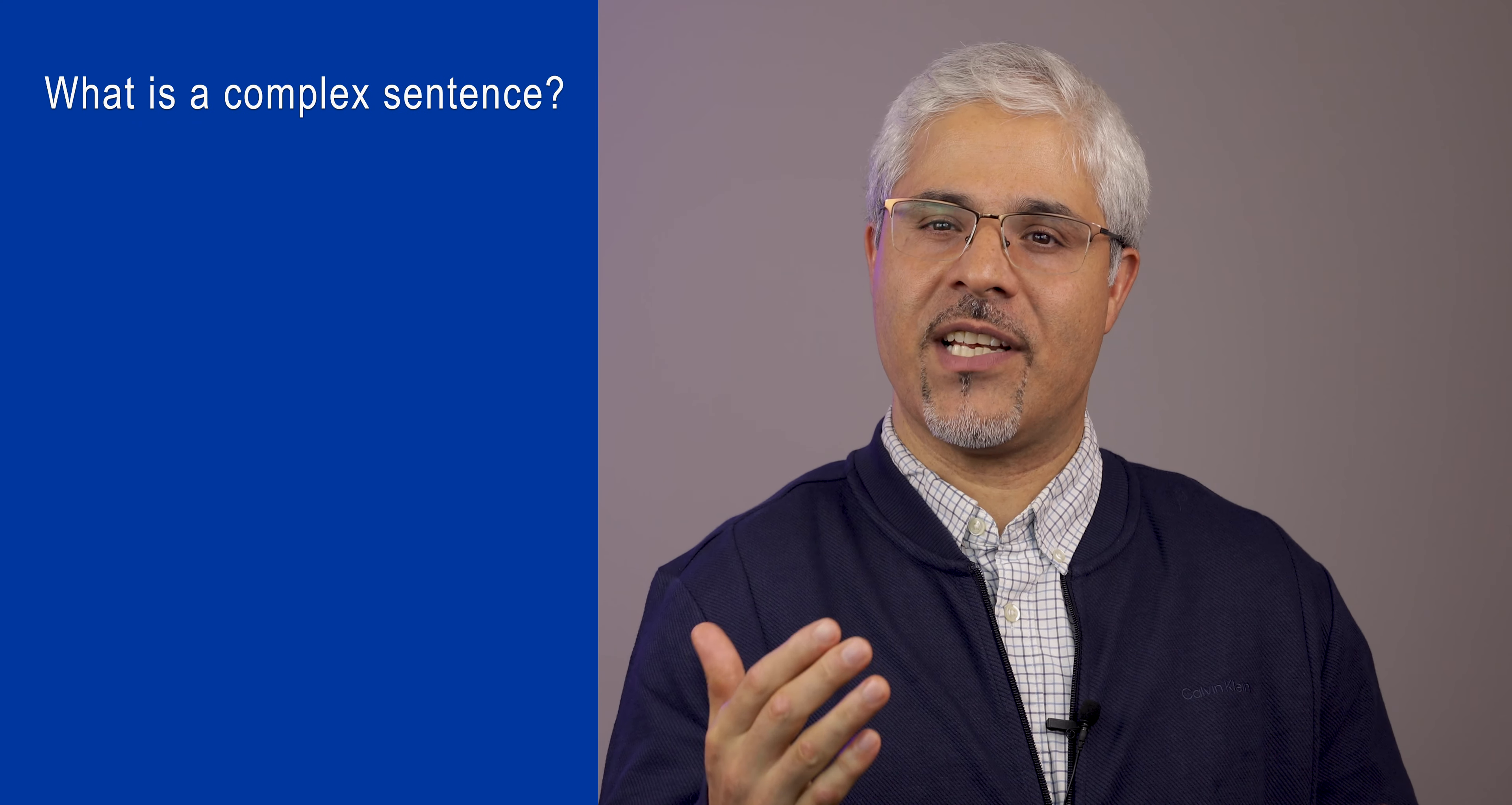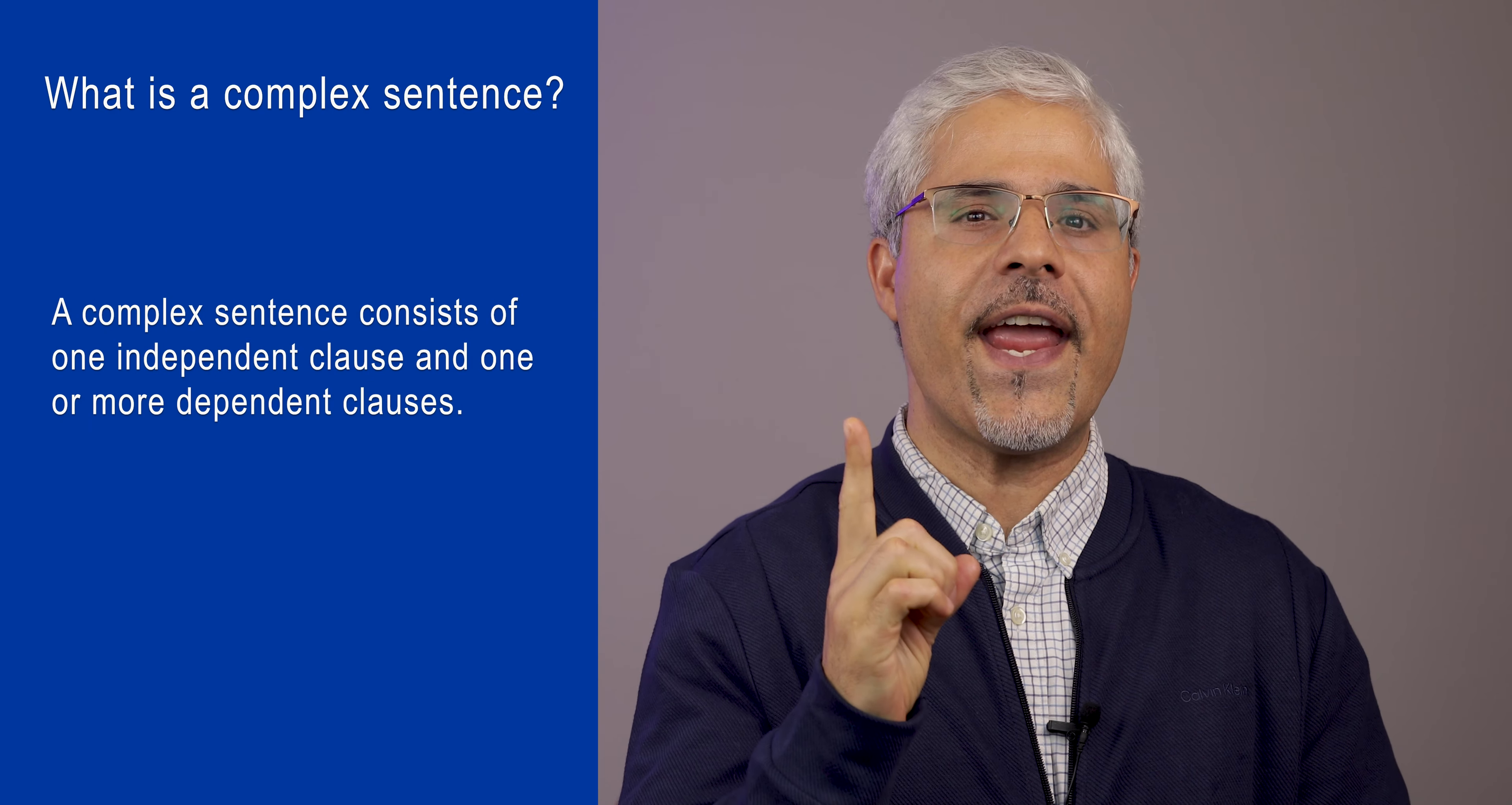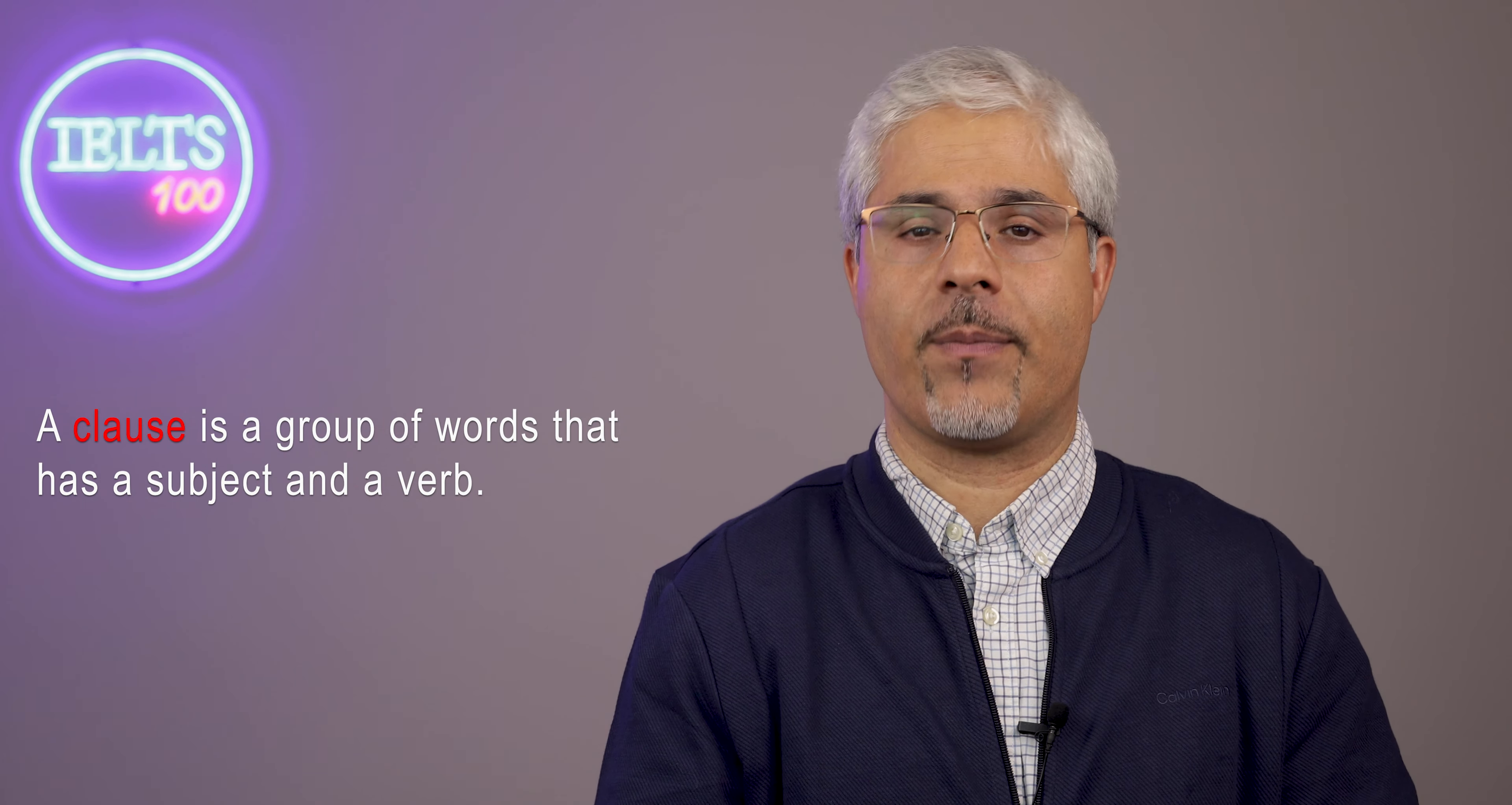What is a complex sentence? A complex sentence consists of one independent clause and one or more dependent clauses. Before I go any further, let me remind you what independent and dependent clauses are. A clause is a group of words that has a subject and a verb.